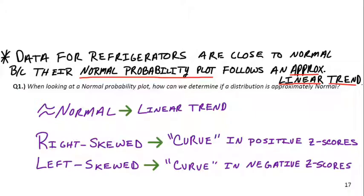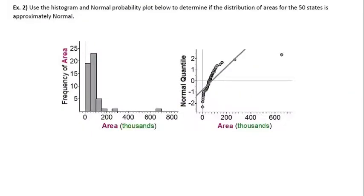Let's look at the last example. It says, use the histogram and the normal probability plot to determine if the distribution of areas for the 50 states is approximately normal. It's kind of interesting. I don't think Illinois is one of the largest. Maybe in the second bin there. Third bin, tops. It's big, but I don't know if it's relative to some of the other states. Use the histogram.